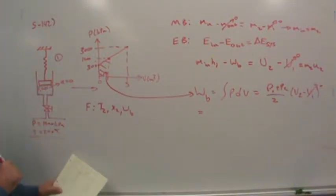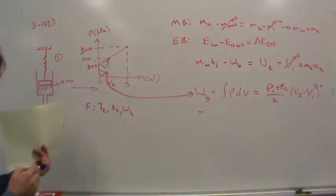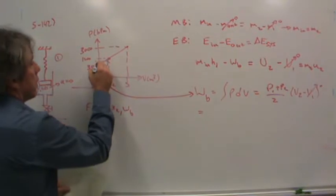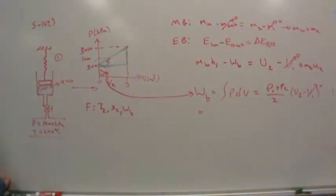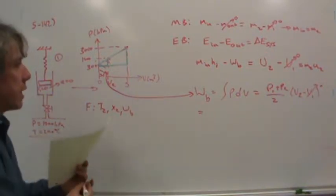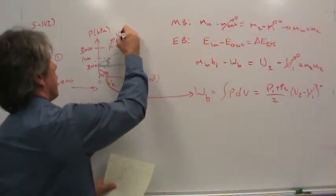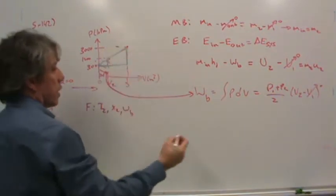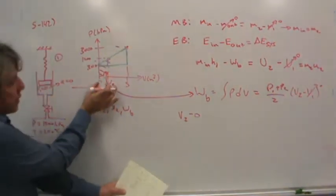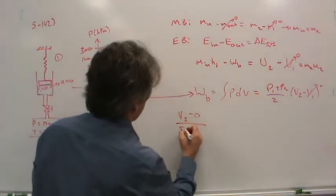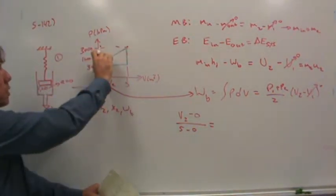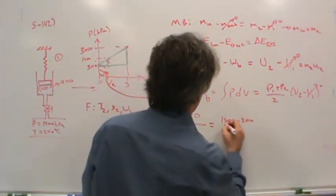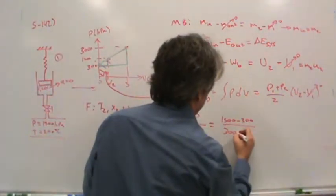So now we can calculate the boundary work by simply adding the two pressures. But we don't know the volume in state two yet, do we? But we know this is a linear line, so could we figure out this volume? Sure. You can look at it as similar triangles. So this triangle is similar to this triangle, right? And so if you think about what that means, what you'll find is that the volume in state two, let me write it out. The volume in state two minus zero, that's this distance, divided by this distance, five minus zero, is equal to this small height, 1,500 minus 300, divided by this large height, 3,000 minus 300.